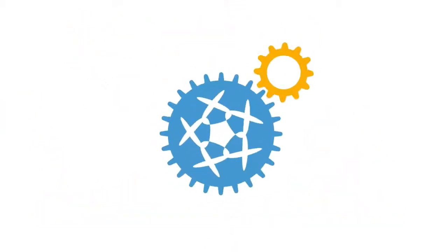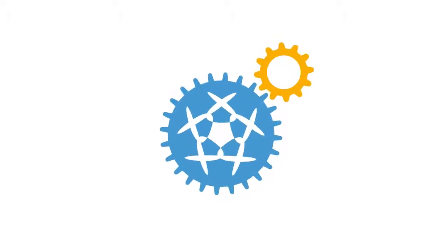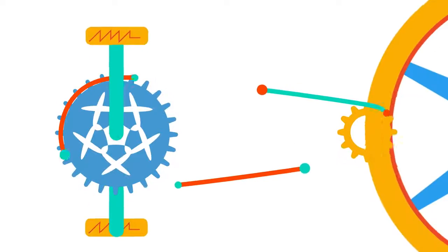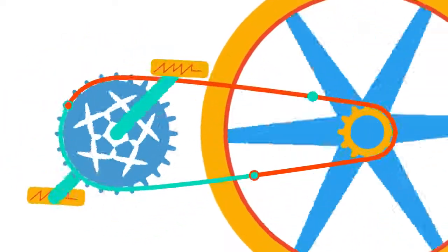Gears are wheels with teeth on the edges that fit together. They transmit power from one part of a machine to another part. So in a bike, they take the power from the pedals to the back wheel.